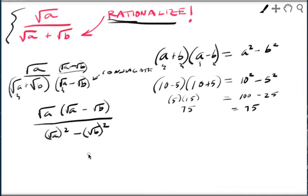Now, I'm hoping you see what happens here on the bottom. The top, for now, I'm going to leave it in this factored form. I'm not going to do the distribution. I'm going to leave it like this. On the bottom, now, we have a square root of a times the square root of a, which is a, minus the square root of b times the square root of b, which is b.